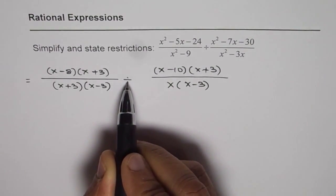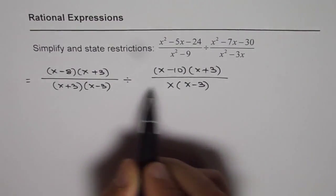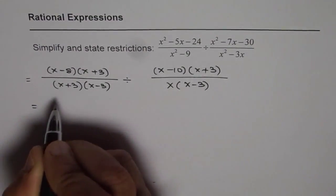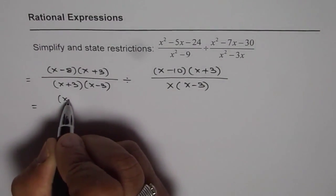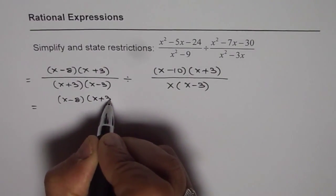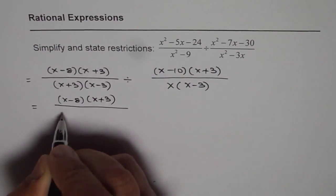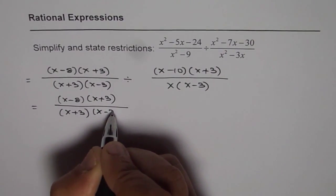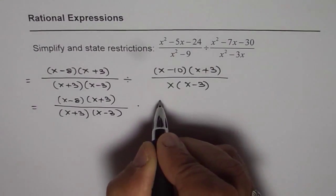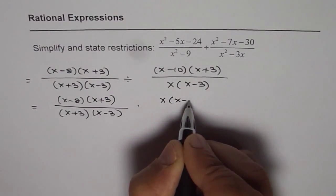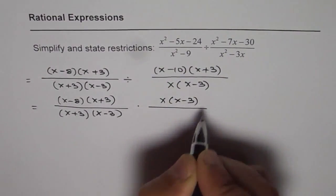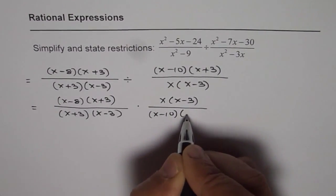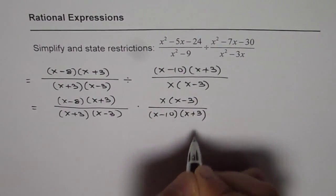Now, division is same as reciprocal multiplication. So, let's rewrite this. We get x minus 8 times x plus 3 over x plus 3 times x minus 3, times x times x minus 3 over x minus 10 times x plus 3.